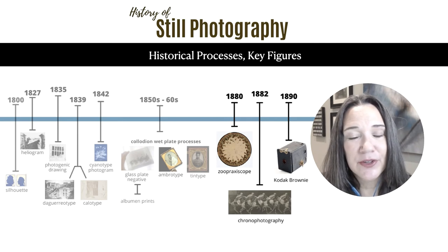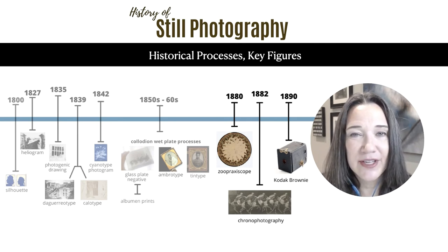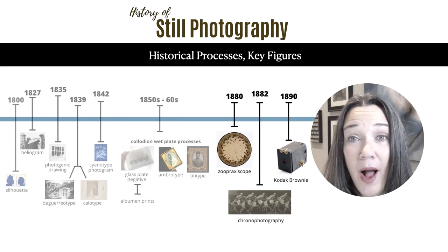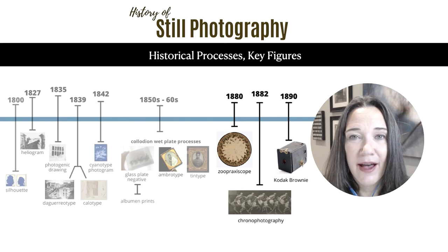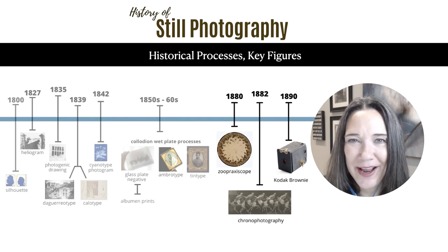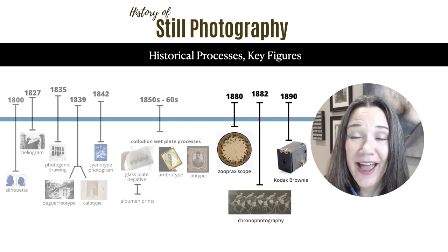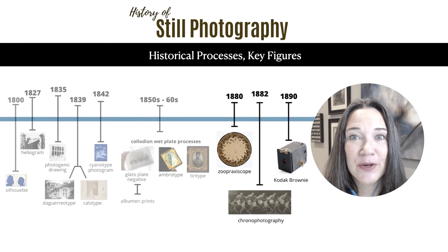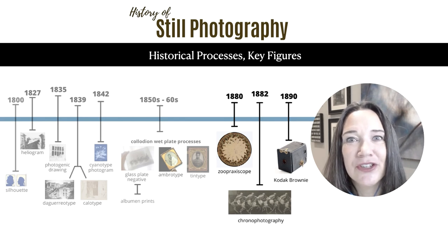You'll start by learning about George Eastman, who was the founder of Kodak. You'll take a little bit of a glimpse into his life and how and why he started Kodak. He's remembered as a very shrewd businessman. And then it was really the 1890 Kodak Brownie camera that really began to revolutionize photography and make it something that anyone could do, even women and children.